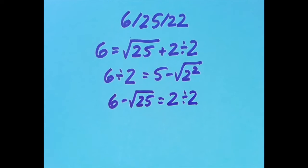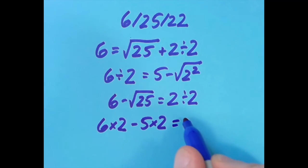Then I tried one more time with the equal sign all the way to the right. For this one, I came up with 6 times 2, which is 12, minus 5 times 2, which is 10. We do the multiplication first on both sides, so we have 12 minus 10, which gives us 2.